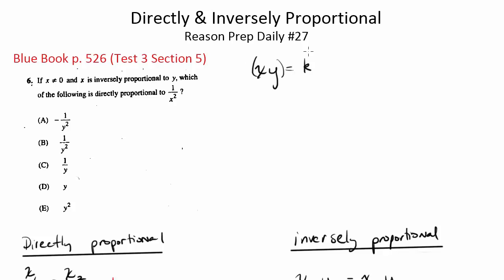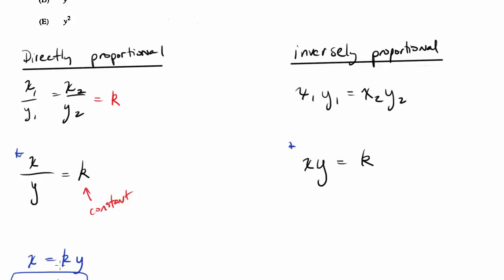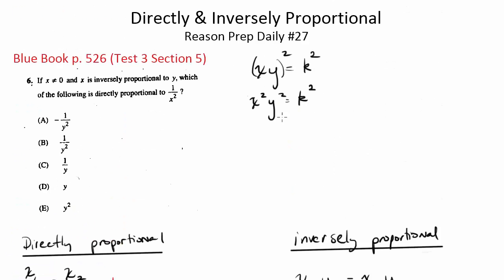So to do that, I'm going to square both sides. That gets me x squared, y squared equals k squared. And now what I need to do is I need to get the variables here, x squared and y squared, on different sides of the equation. So I'm just going to divide both sides by x squared. And when I do that, I get y squared equals k squared over x squared.